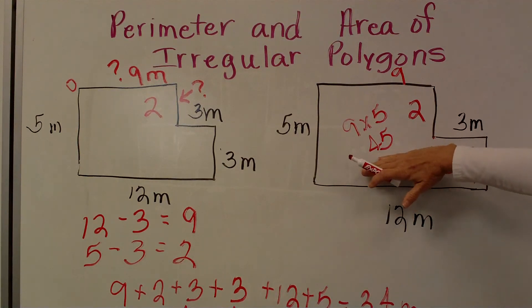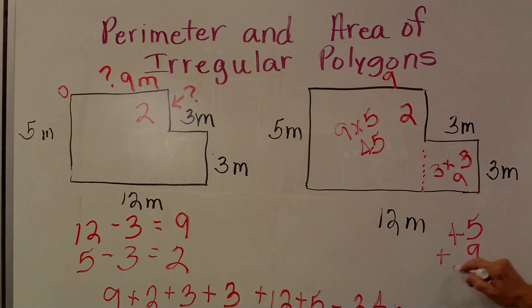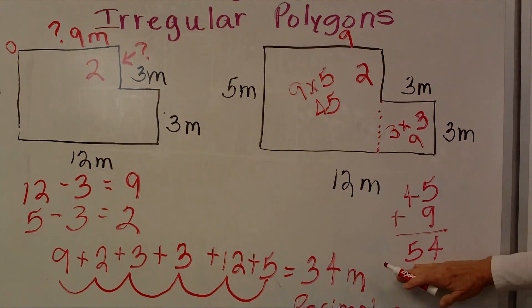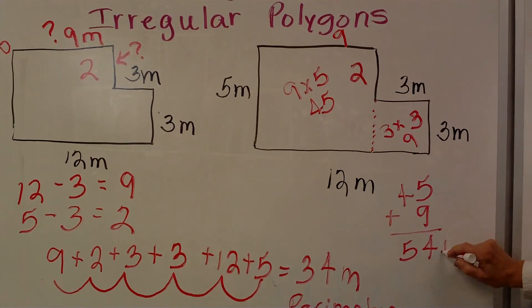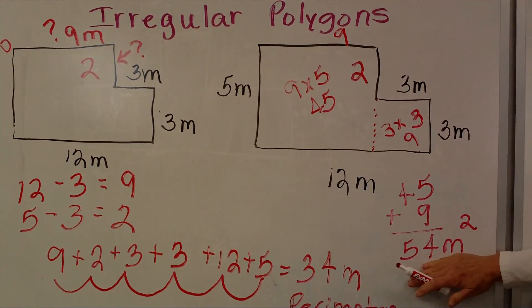I need to take 45 plus 9 and add those two spaces together and I will end up with a measurement of 54 meters. When doing area, we use an exponent and we say 54 meters squared.